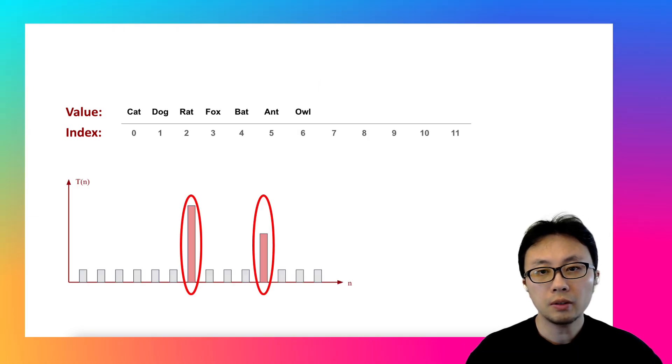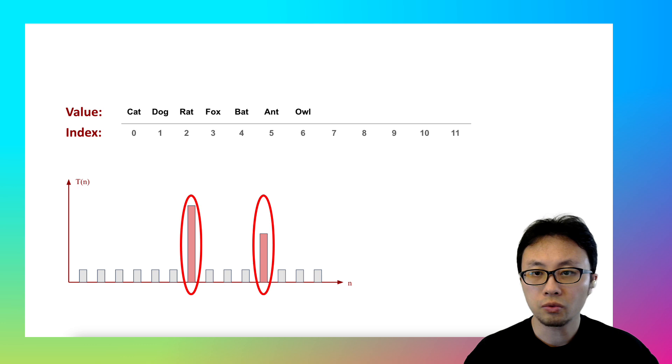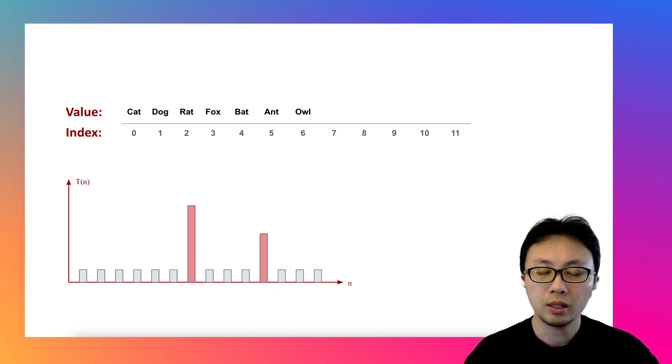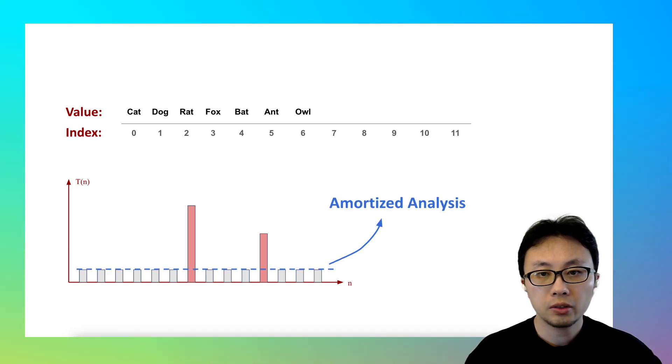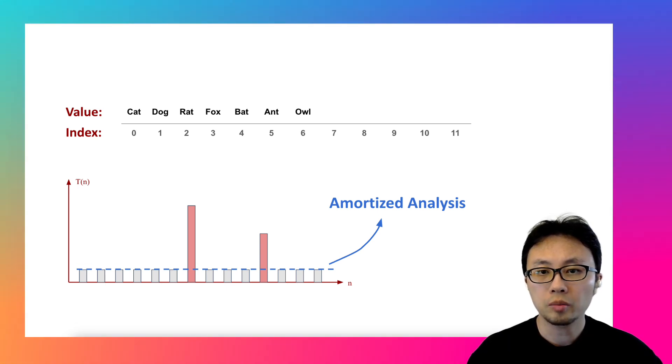Here's a twist. Even though some operations take longer to run, the average cost per operation can still be incredibly low. This is where the amortized analysis steps in, by giving us the real picture of the performance of one or more operations over time, not just in the worst moment.